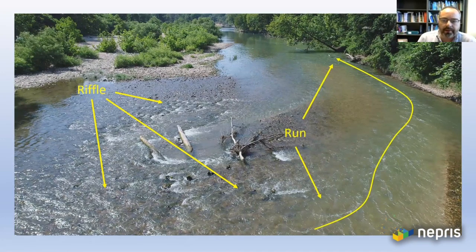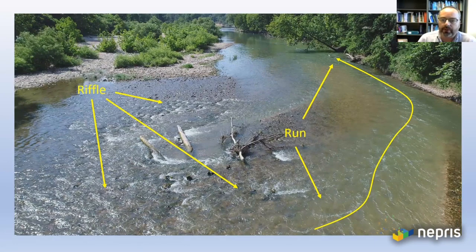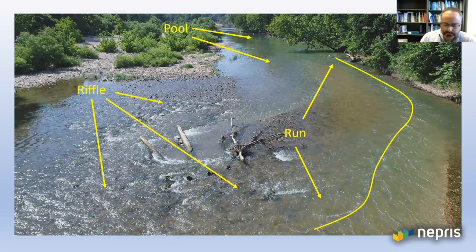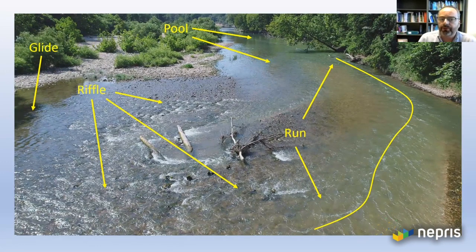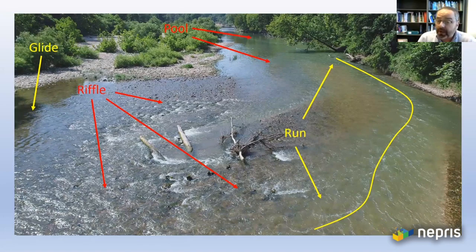This habitat is called a run. What differentiates the run from other habitats is that it's deeper and faster than a pool, but it lacks the broken surface water and shallow habitat seen in riffles. Farther downstream are pool habitats — water is slow-moving and tends to be the deepest part of a stream. There's also a habitat called a glide, which is shallow but slow-moving, usually preceding a riffle. For this talk, I'll focus primarily on riffles and pools, as these are the two most distinct habitats in rivers and streams.